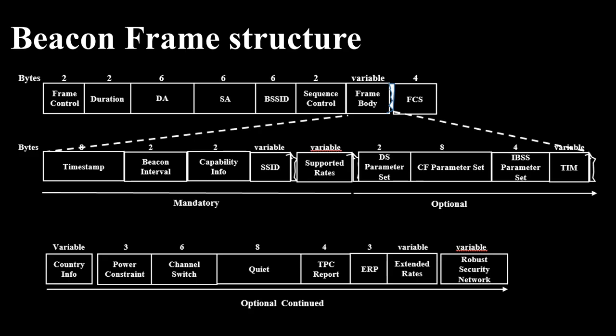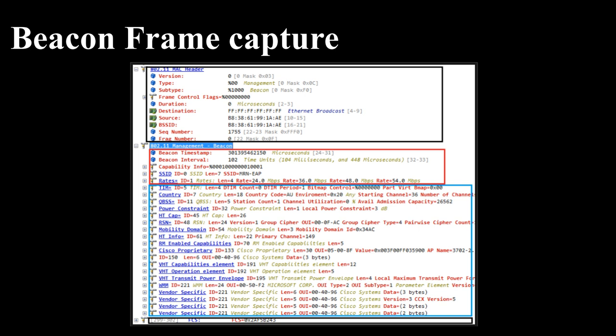Welcome. Today's topic of discussion is the beacon frame, one of the management frames. Beacon frames are used by the access points to communicate throughout the serviced area the characteristics of the connection offered to the cell members. This information is used by clients trying to connect to the network as well as clients already associated to the BSS.